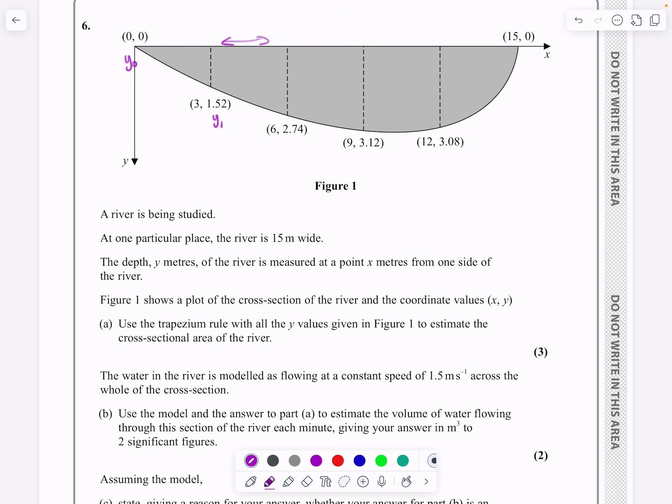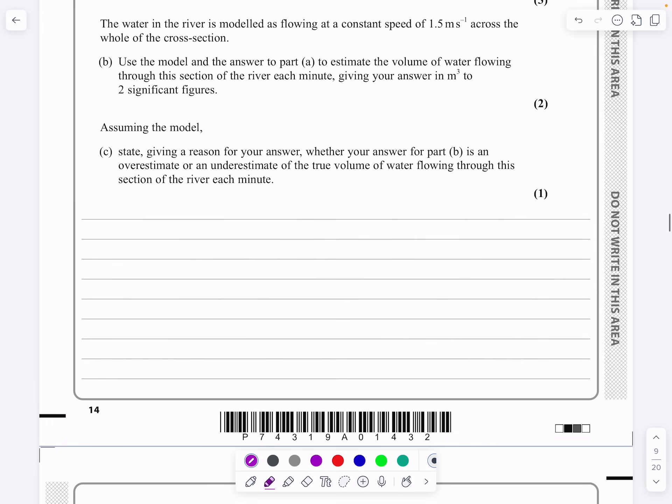Then there's y1, y2, y3, y4, and again, unusually, y5 will be a value of zero there. But we're just going to employ the trapezium rule. Let's get going and actually do it.